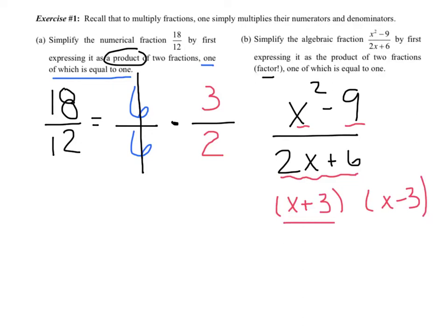Now I'm just going to do it in the opposite order. I'm going to say that's really a 2 times an x plus 3. So what they're saying is really, I have two fractions times each other, and one of them is equivalent to 1. x plus 3 over x plus 3 cancels, and that gets you a 1 because it's the same term. So this reduces to x minus 3 over 2.